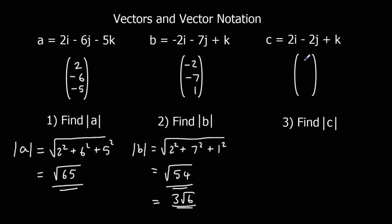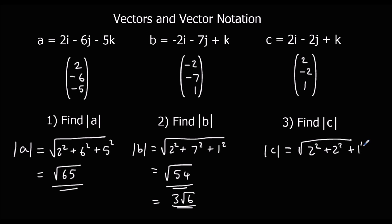And c — we've got (2, minus 2, 1). So the modulus is the square root of 2 squared plus 2 squared plus 1 squared. That's root 9, which is 3.